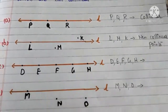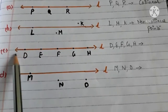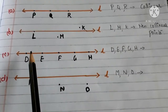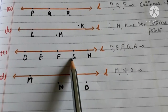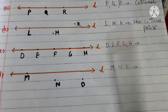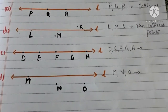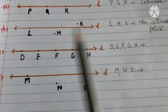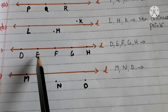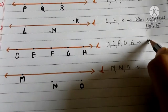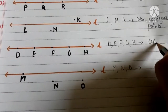Let us go to part C. Here we have the line L and the points D, E, F, G, H. These points are on the same line L. So, the points D, E, F, G, H are collinear points.